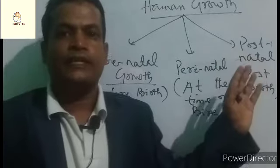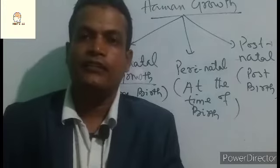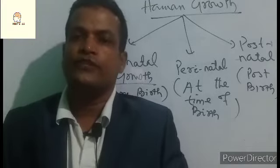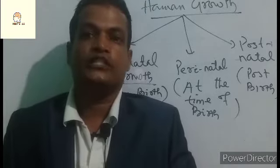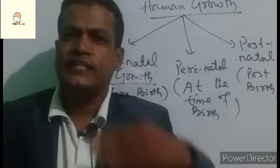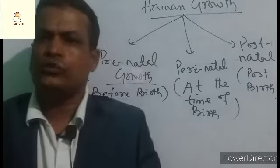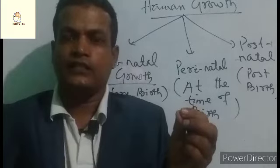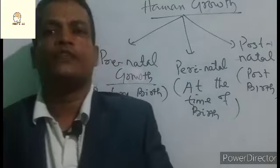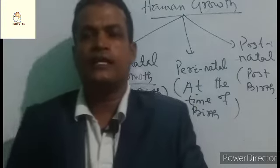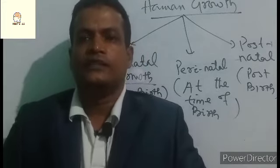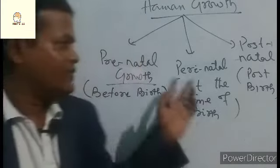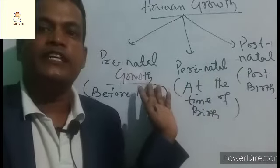Human growth can be divided into prenatal, perinatal, and postnatal. The gestation period is the period from conception till birth. In case of humans, the gestation period is generally considered nine months or 40 weeks. During those 40 weeks, it is called the prenatal period. And at the time of birth, when the 40 weeks are completed, then the baby takes birth — that birth period is called perinatal.